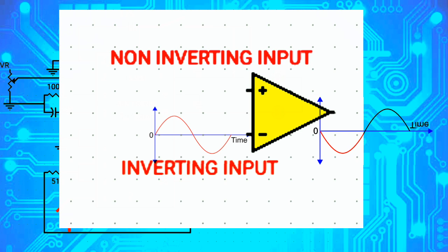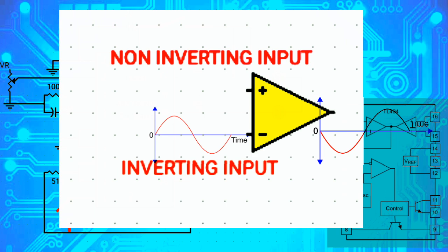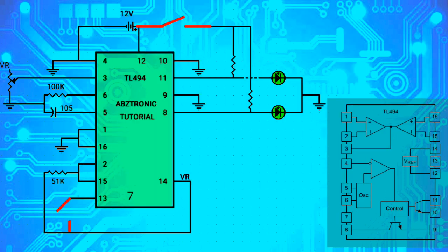When the signal is fed from the inverting input, the signal output will be inverted — 180 degrees out of phase. That is why the name suggests 'inverting input.' Pin 3 is the feedback pin; it is connected from the output of both comparator 1 and comparator 2.